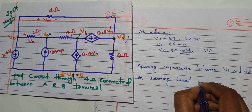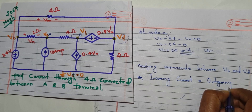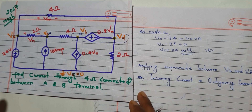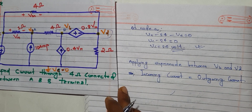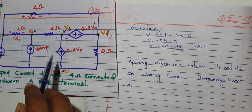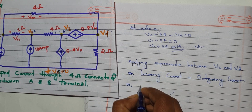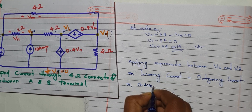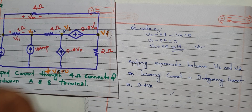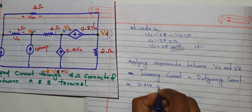Applying KCL: incoming current equals outgoing current. For the super node, the incoming current at node BB is 0.4 amperes. There is no resistor directly at node BD from that side, so 0.4 is the incoming current for BB. For BD, the current is coming from another branch.